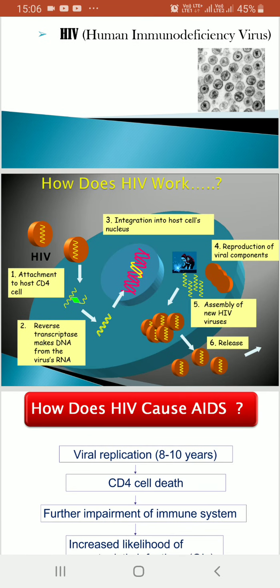How does HIV work? When this virus enters the body, it attaches to the host CD4 cell. The virus's RNA becomes similar to the CD4 cell's RNA. Through reverse transcriptase, the virus's RNA is used to make DNA. This DNA integrates into the nucleus of the host cell and replicates. The viral DNA keeps replicating and reproducing, resulting in assembly of new HIV virus which is released into blood circulation.